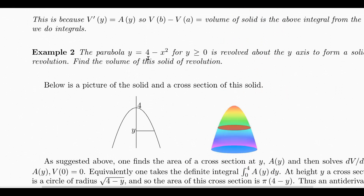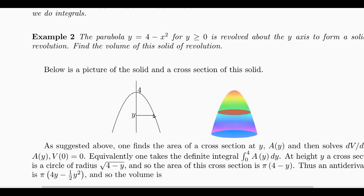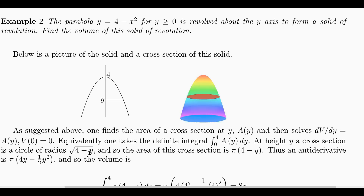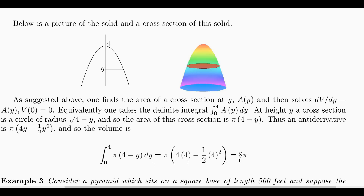If you have the parabola Y equal to 4 minus X squared, this is a side view, and corresponding to Y here there would be a slice. The distance from here to here would be the radius of that circle, and we can solve for that: it's the square root of 4 minus Y. So the area of the slice at height Y would just be pi times 4 minus Y. All we have to do is compute this integral by finding an anti-derivative and plugging in the endpoints.